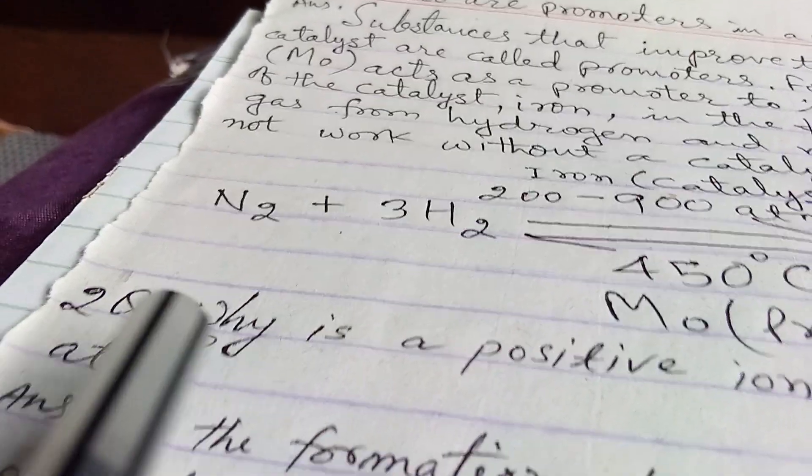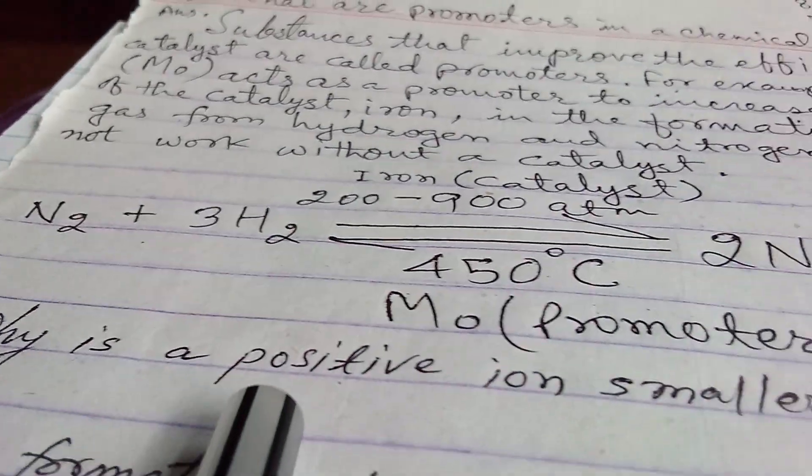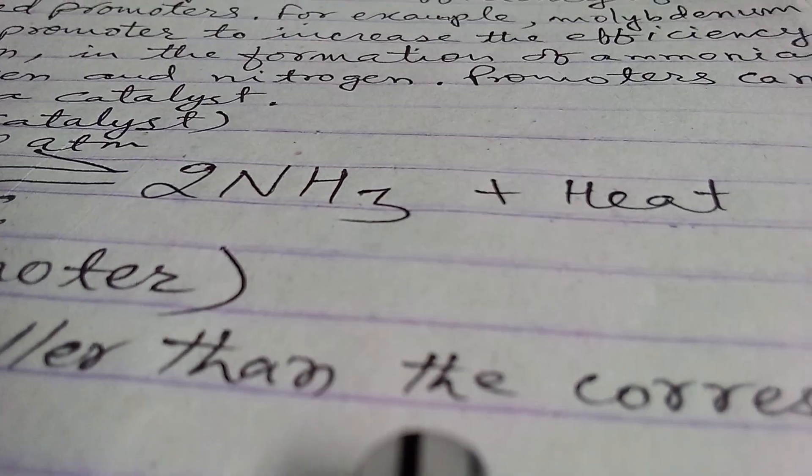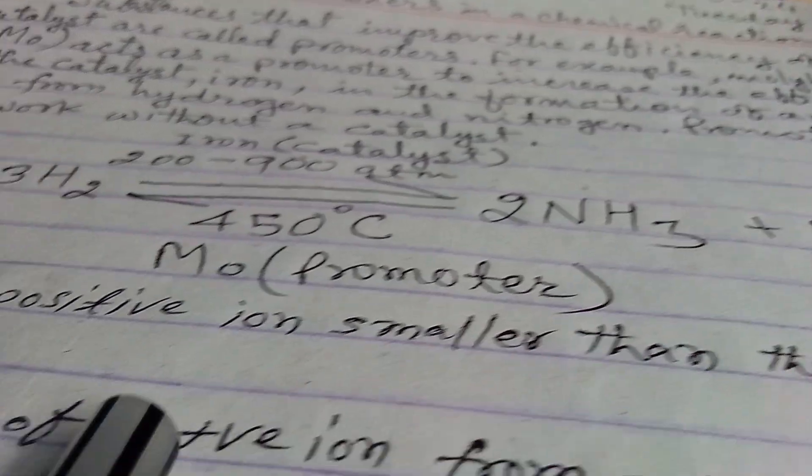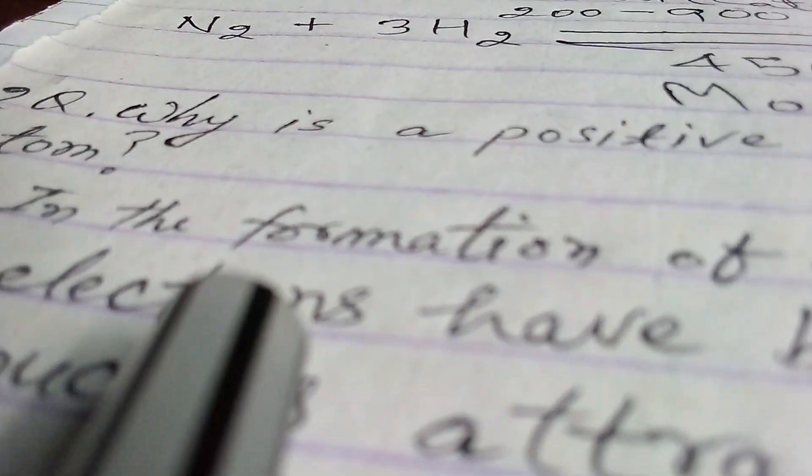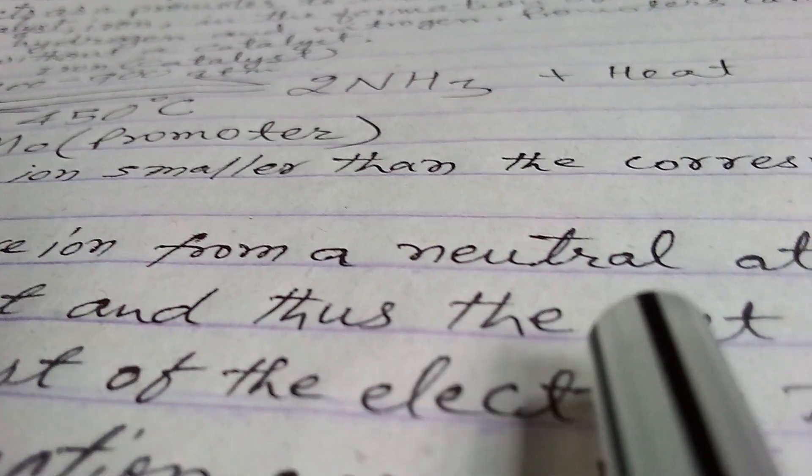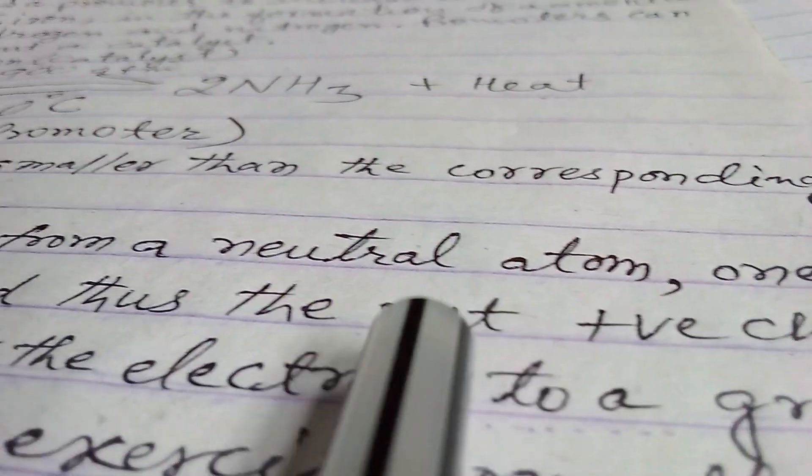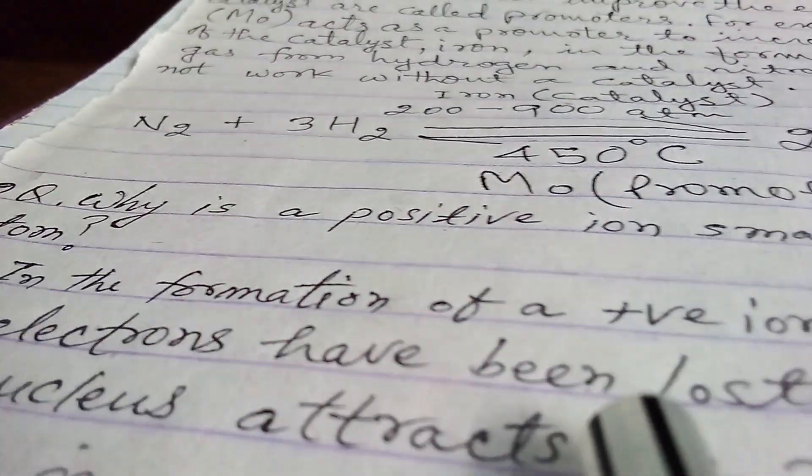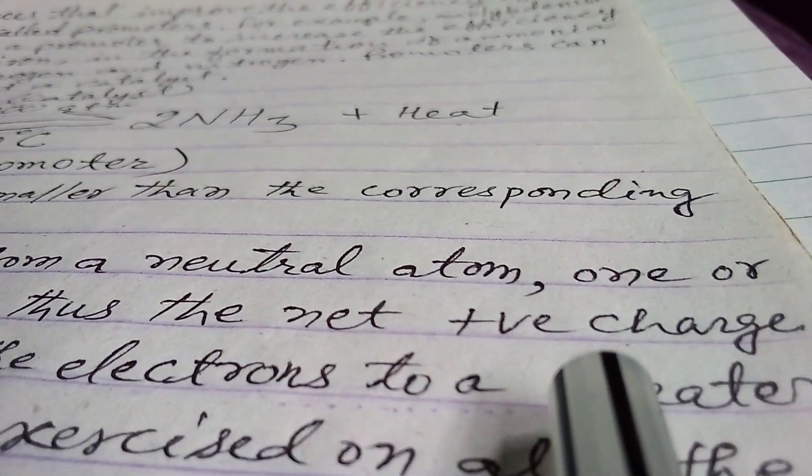Now second question is: why is a positive ion smaller than the corresponding atom? Answer is: in the formation of a positive ion from a neutral atom, one or more electrons have been lost and thus the net positive charge